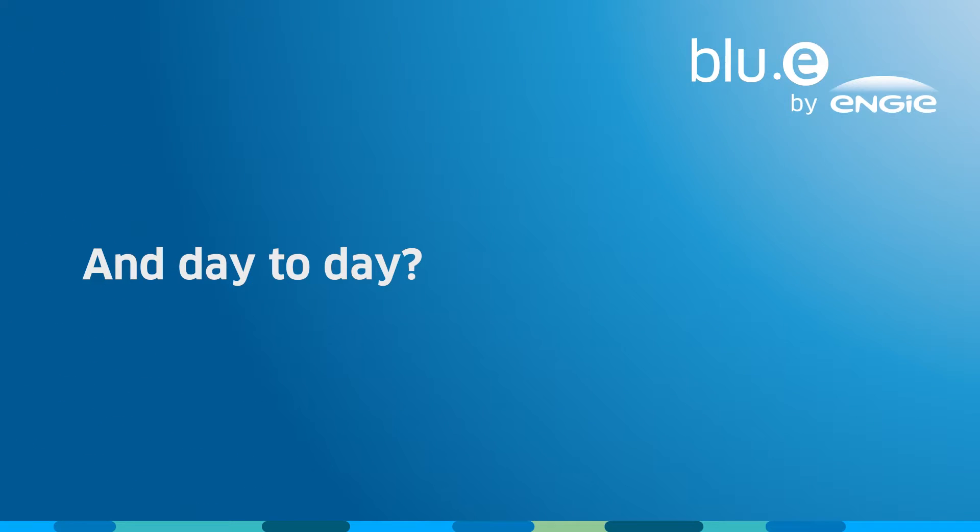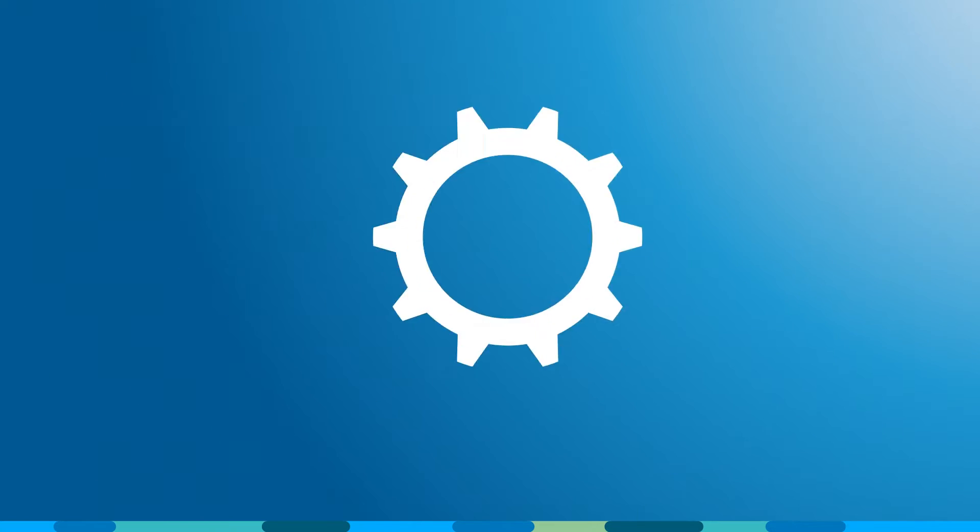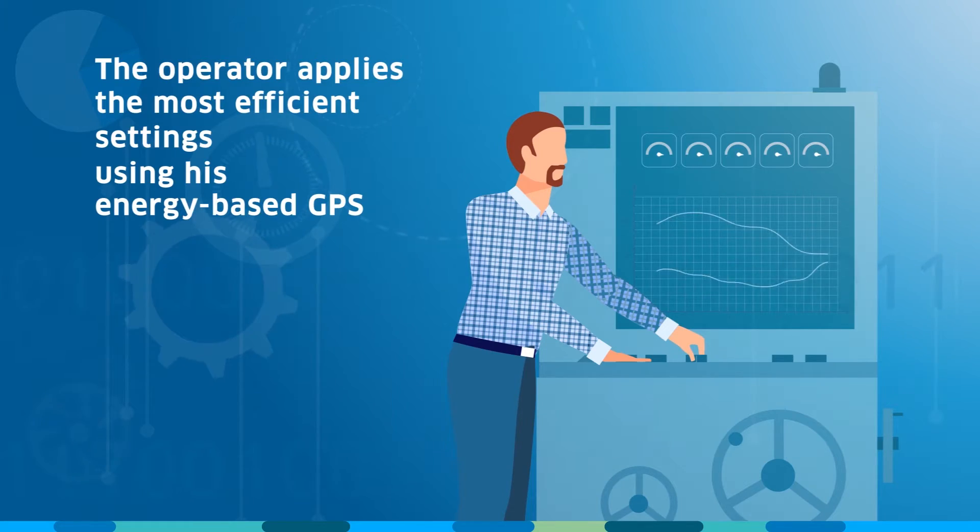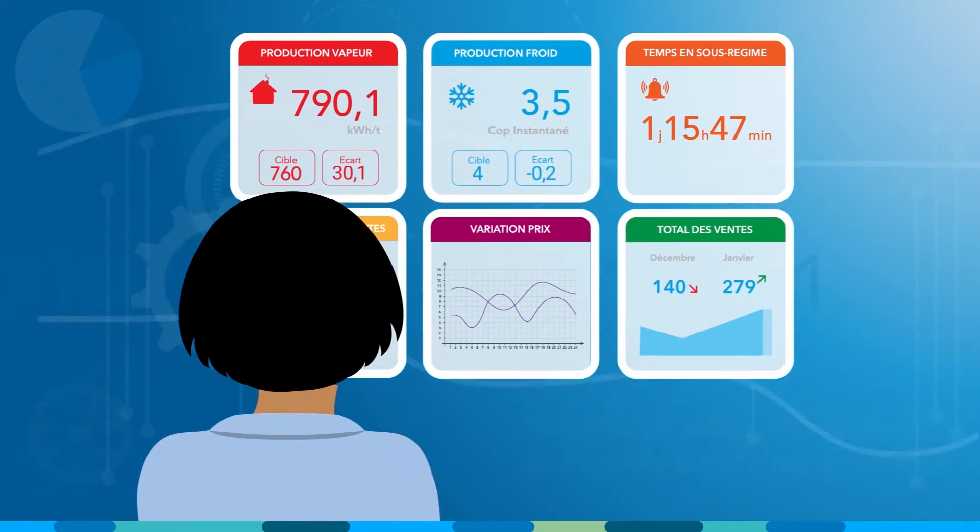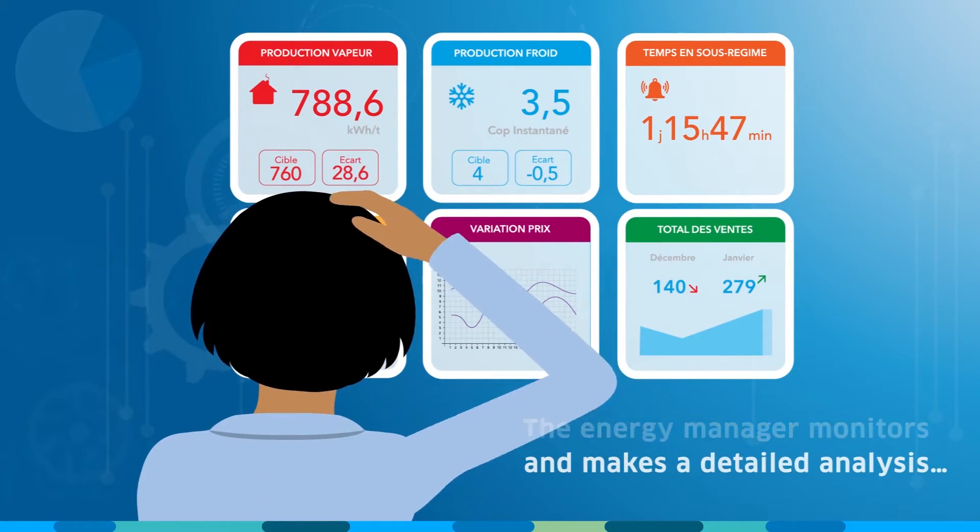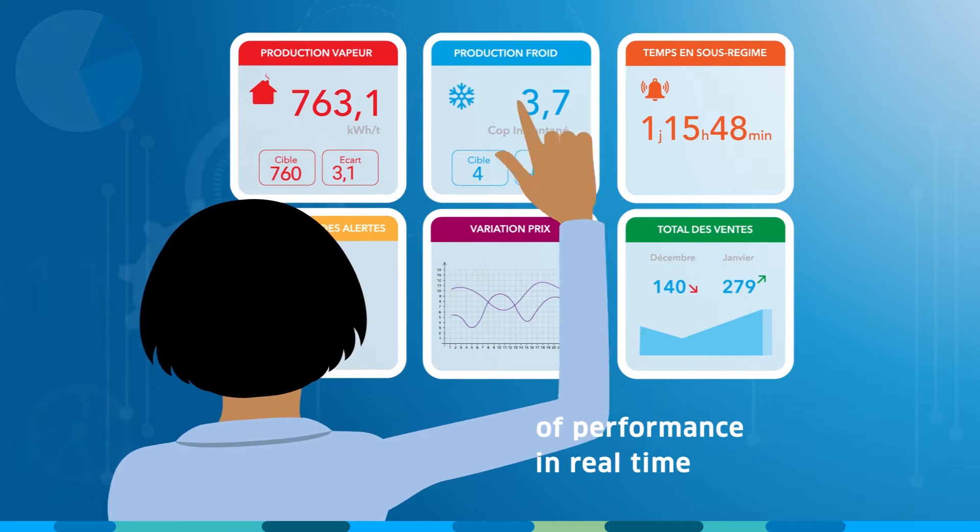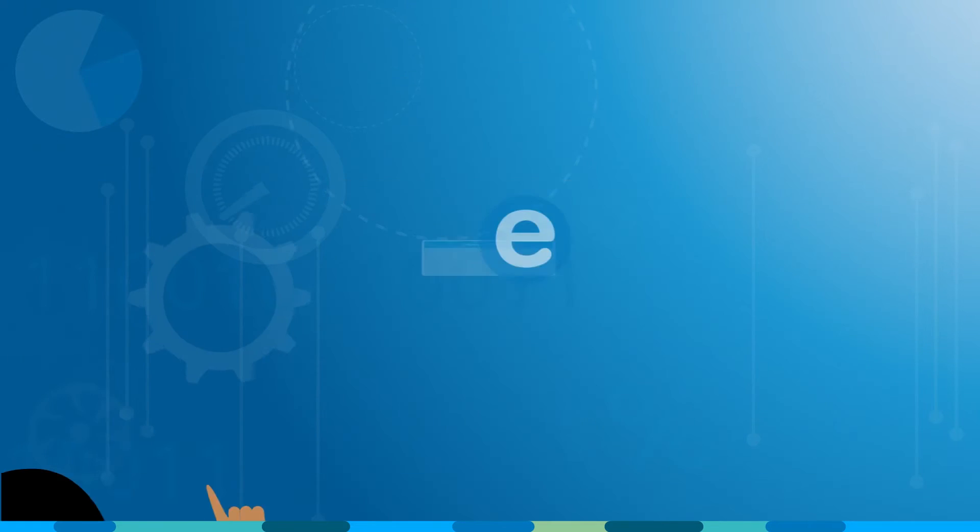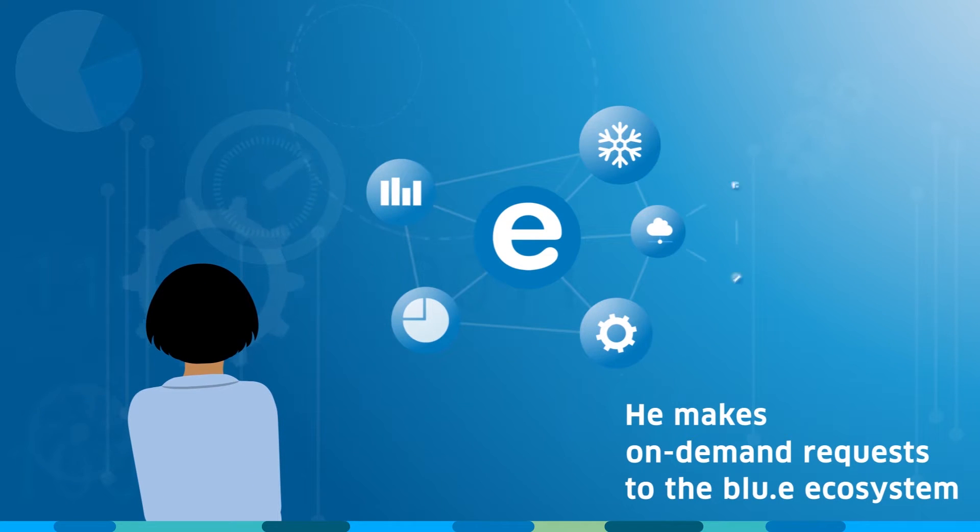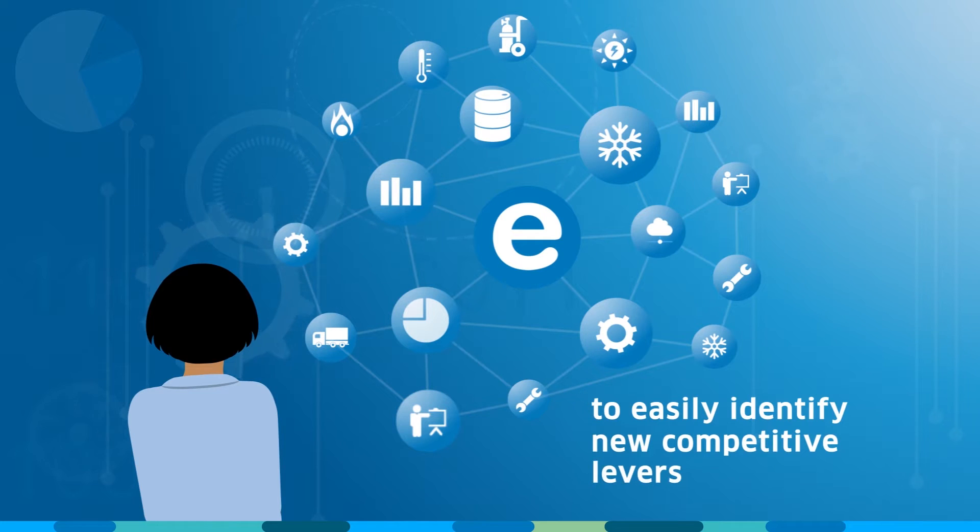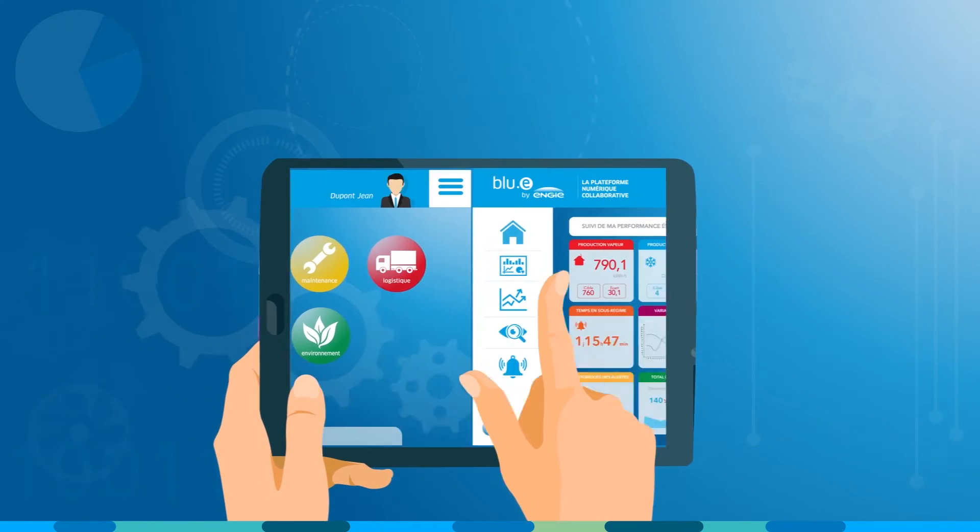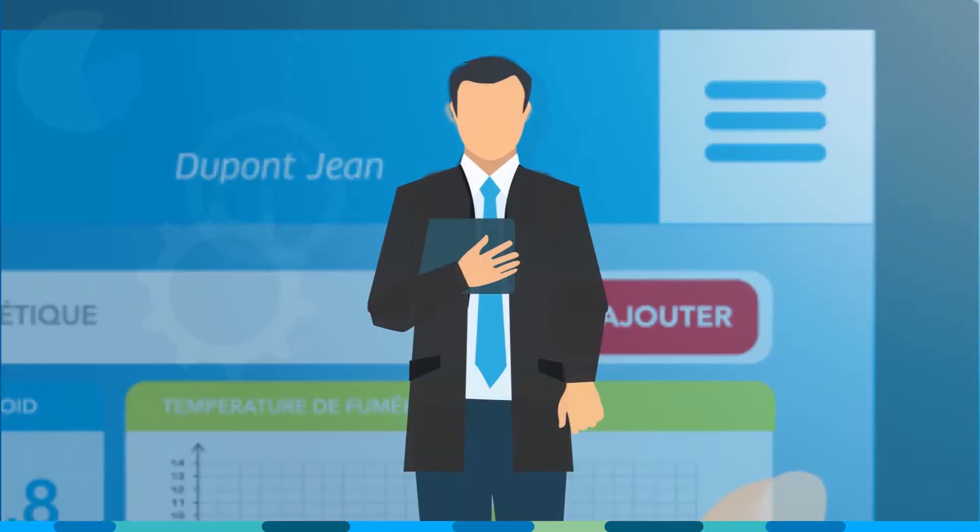BlueE by Engie and day to day? The operator applies the most efficient settings using his energy-based GPS. The energy manager monitors and makes a detailed analysis of performance in real-time. He makes on-demand requests to the BlueE ecosystem to easily identify new competitive levers. The plant manager is connected to factory teams.